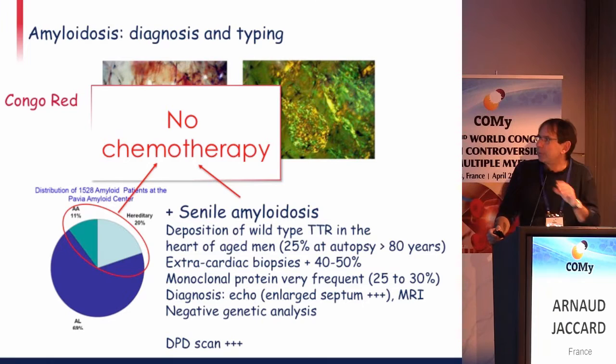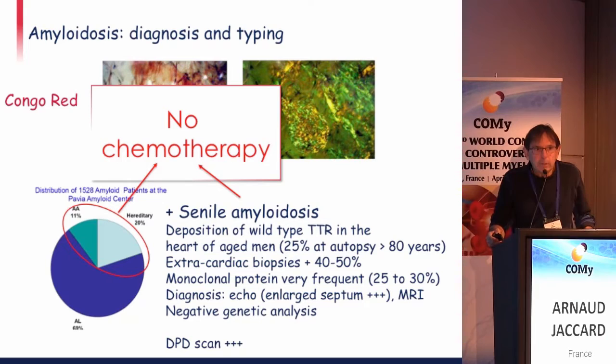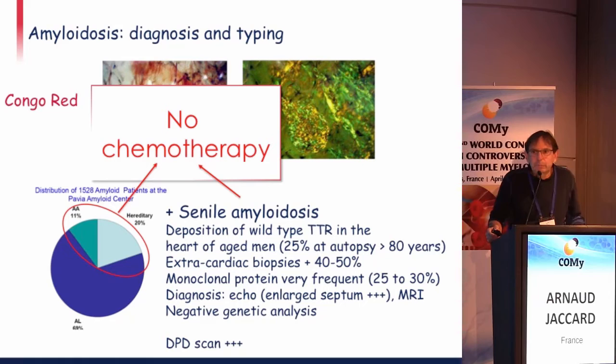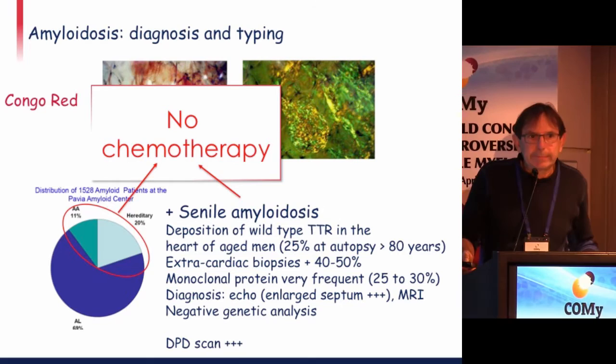Another increasingly recognized form is senile amyloidosis — deposition of wild-type TTR in the heart of aged men. It is very frequent after 80 years; at autopsies, amyloidosis is found in 25 percent of hearts of old patients. It is difficult to diagnose because extra-cardiac biopsies are often negative, and these older patients very frequently have a monoclonal protein — up to 30 percent in some publications. Diagnosis is made by echocardiography, MRI, and negative genetic analysis for TTR mutations.